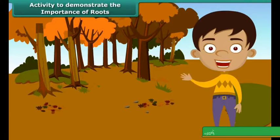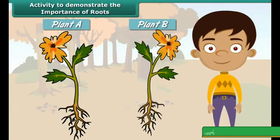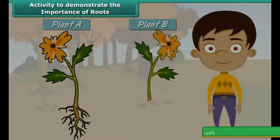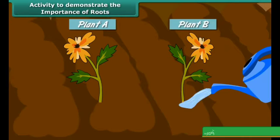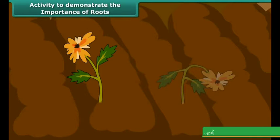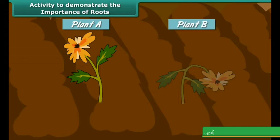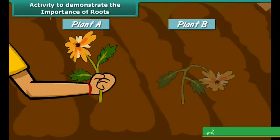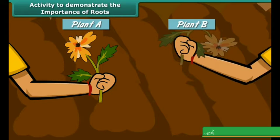We can perform an activity to understand the importance of roots. We will take two plants and remove the root from plant B, then observe what happens. Look at this picture. After a few days, the plant without roots will die, and we can easily pluck out plant B. But in the case of plant A, if we try to pull it, we will not be able to do so easily, because its roots hold it firmly in the soil. Plant B, however, can be easily removed because it has no root.